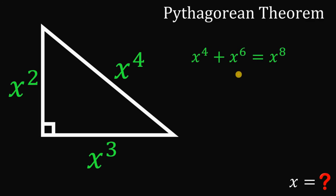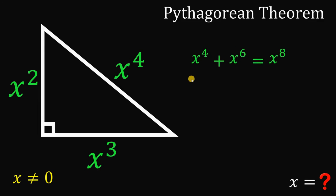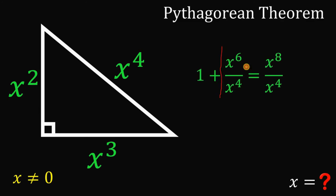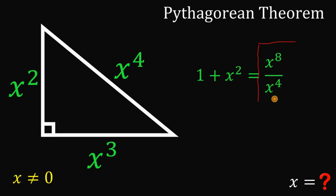Take note that x cannot equal 0, because if x equals 0, all sides of the triangle would be 0. Since x is not equal to 0, x to the fourth power is not equal to 0, so we can divide all terms by x to the fourth power. This gives us 1 plus x squared equals x to the fourth power.